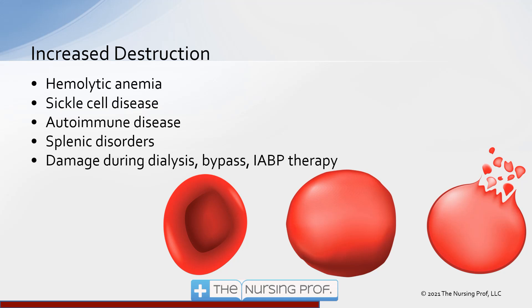We can also have increased destruction of red blood cells — hemolytic anemia. In sickle cell disease, some red blood cells become sickled cells, which are then destroyed by the body because they don't function like normal red blood cells and end up blocking peripheral circulation. Autoimmune diseases, splenic disorders, and damage from external therapies — such as running blood through a dialysis machine, a bypass machine, or an intra-aortic balloon pump — can also cause red blood cell destruction.